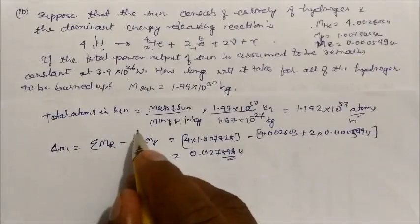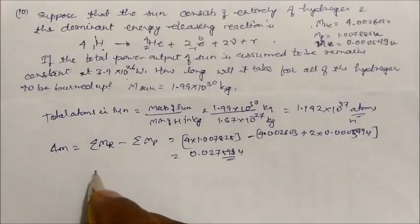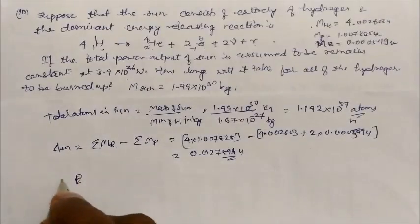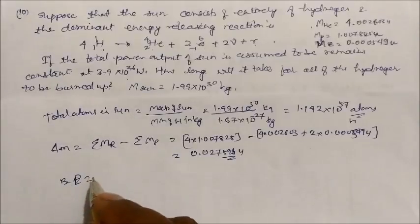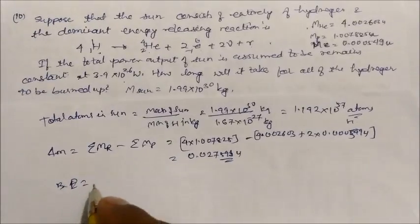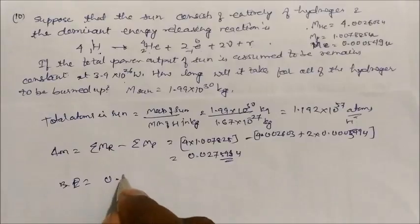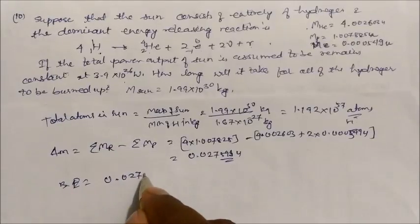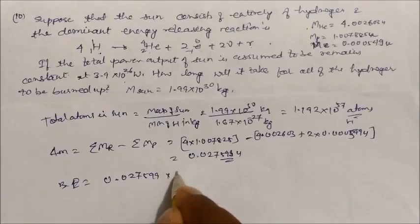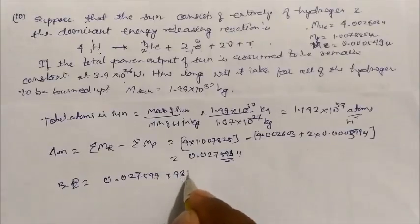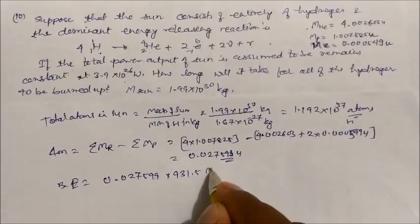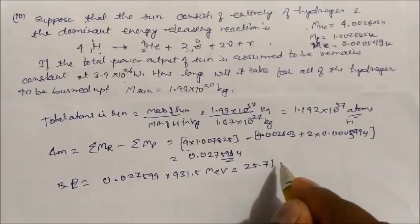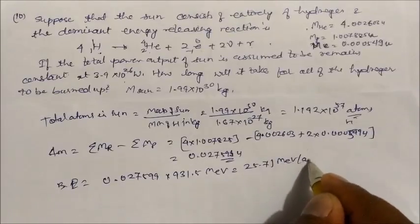The total binding energy released per reaction is 0.027599 u × 931.5 MeV/u. On solving you will get 25.71 MeV per reaction (per 4 atoms of hydrogen converted to helium).